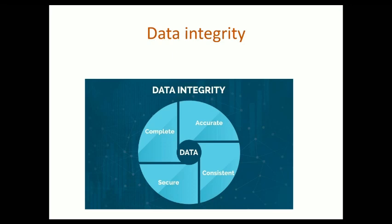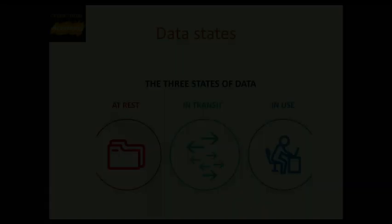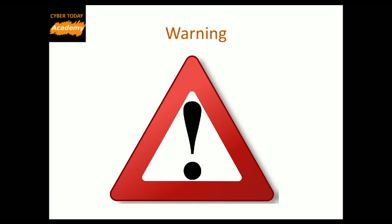Data can be in one of three states: at rest, in transit, or in use. Data at rest is the data stored in servers, PCs, or storage media. Data in transit is the data moving through the network from client to server or between two servers. The third type is data in use, which is the data currently used by the user. Sensitive business and personal data must be encrypted all the time, everywhere.